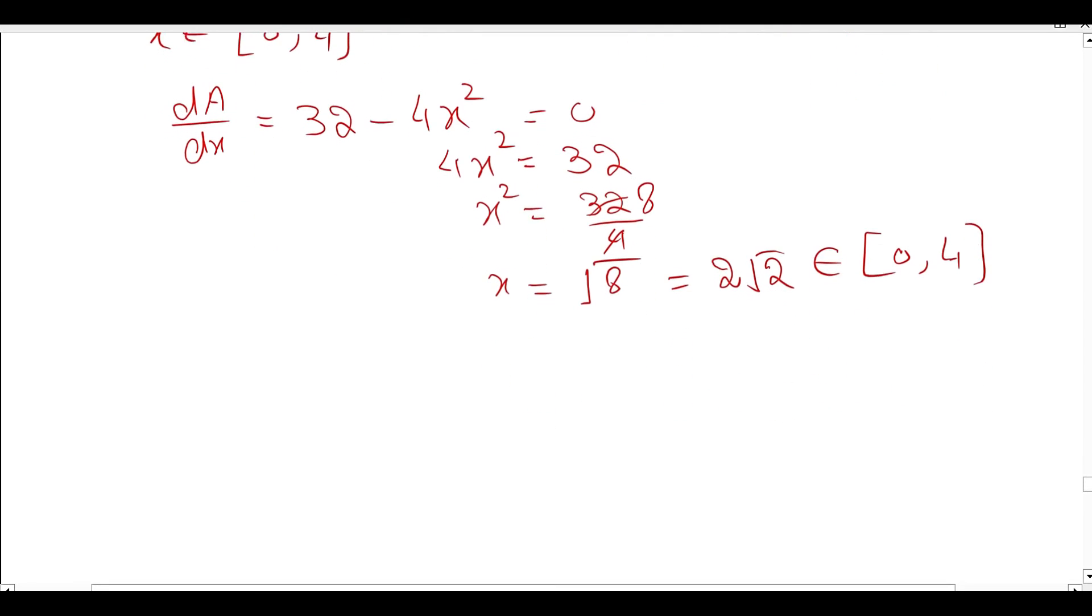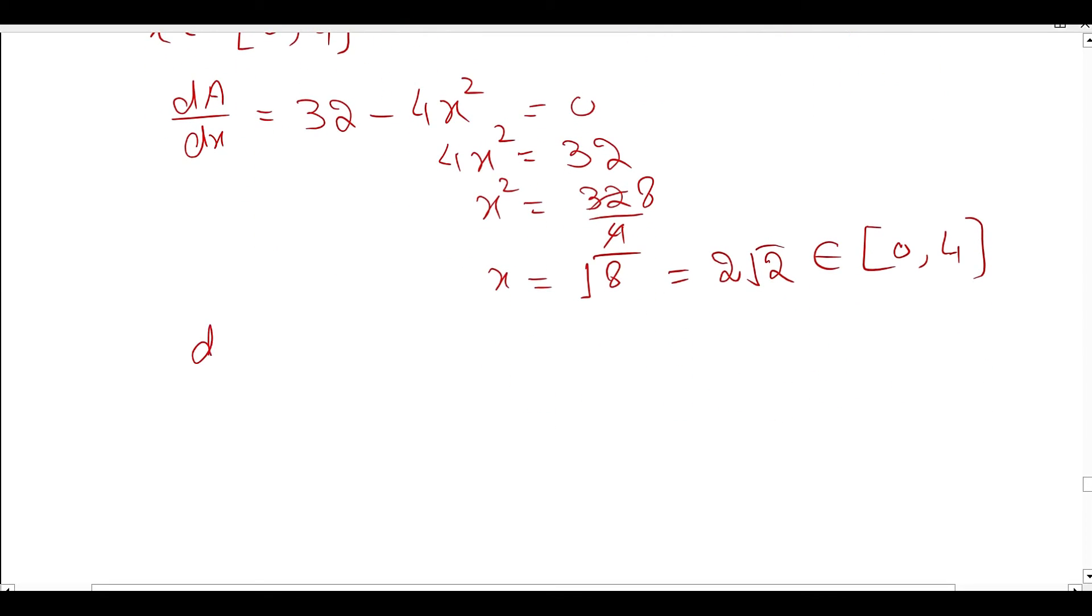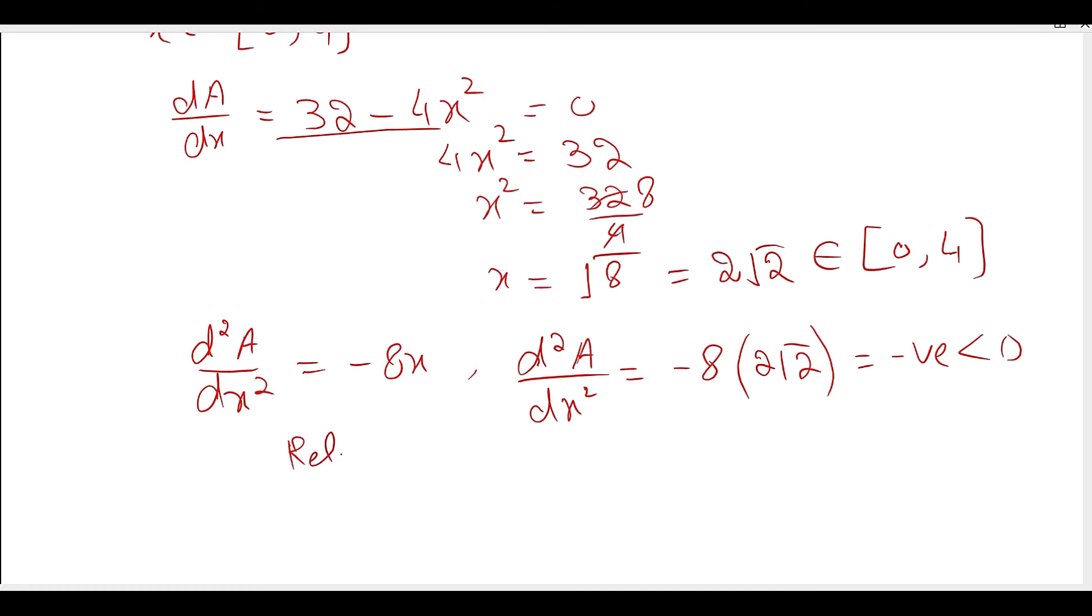Taking the second derivative, d²A/dx² = -8x. Putting the value x = 2√2, we get a negative value, less than 0. The second derivative test says this is a relative maximum.